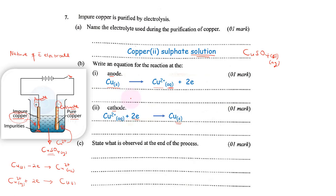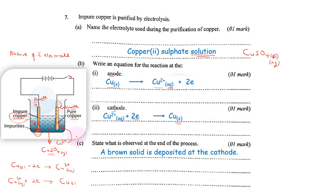For you to come up with such equations, you must have some prior knowledge of how we purify copper using electrolysis. State what is observed at the end of the process. At the end, when the process is complete, when we close the switch and leave it to stand until the end — impurities are one of the things we shall observe, but that is minor. One key thing we shall note is that we shall see a brown solid being deposited at the cathode. You are still free to talk about the impurities; it's also an observation.